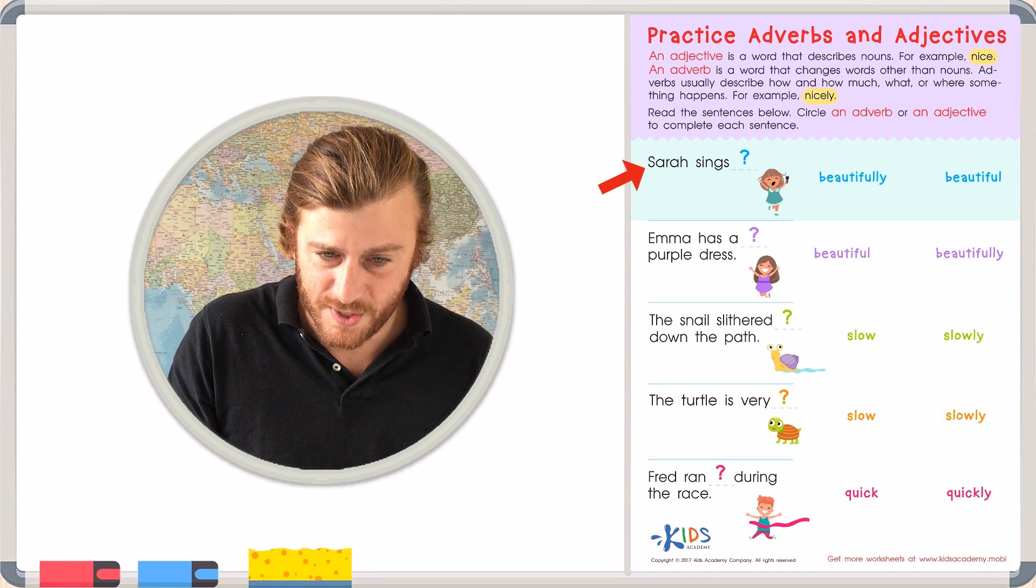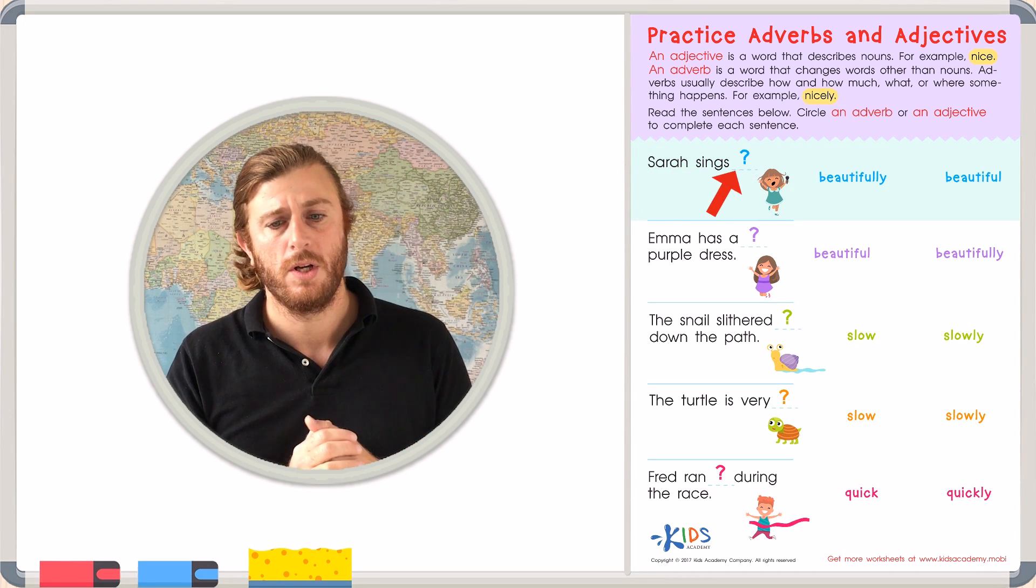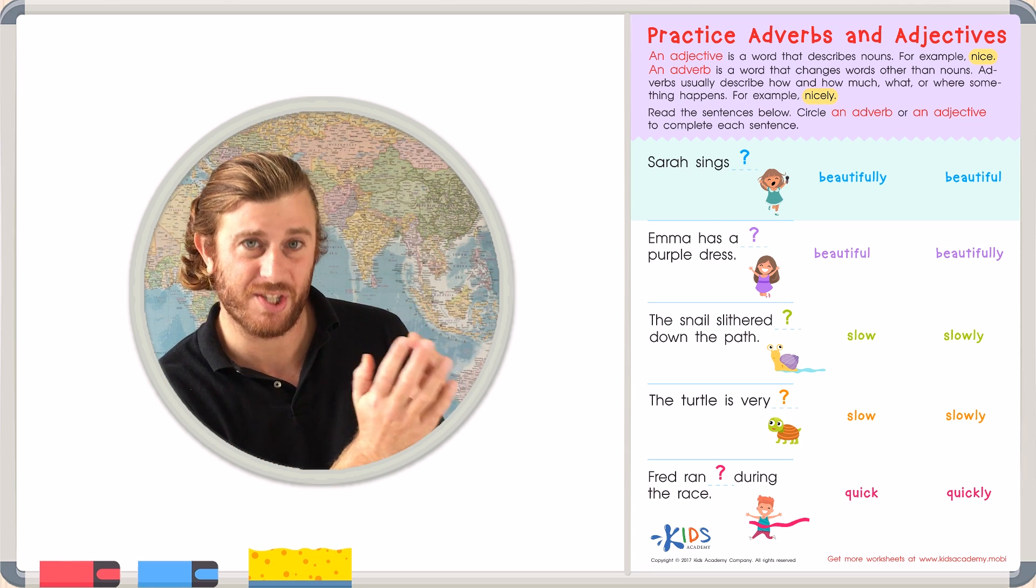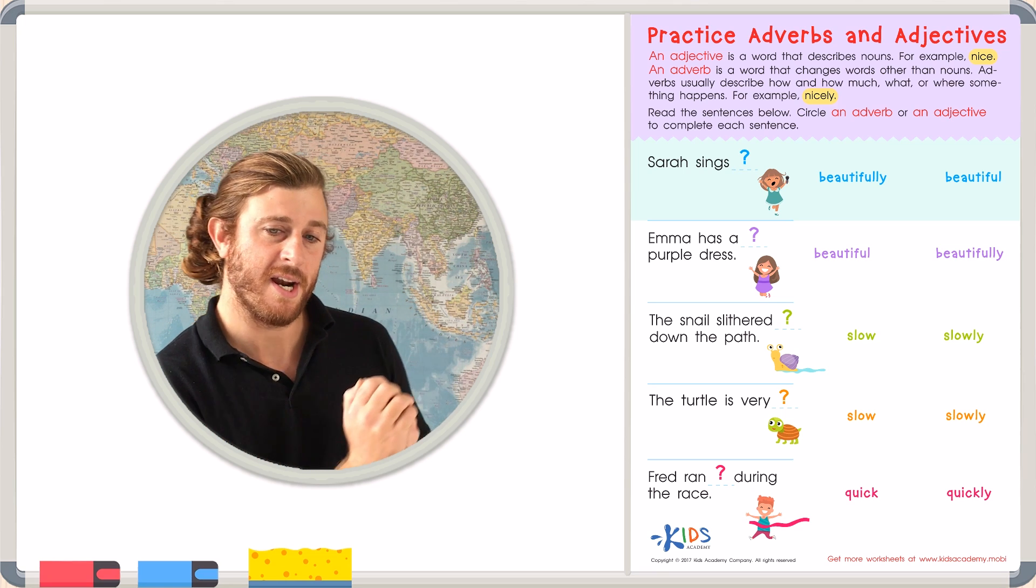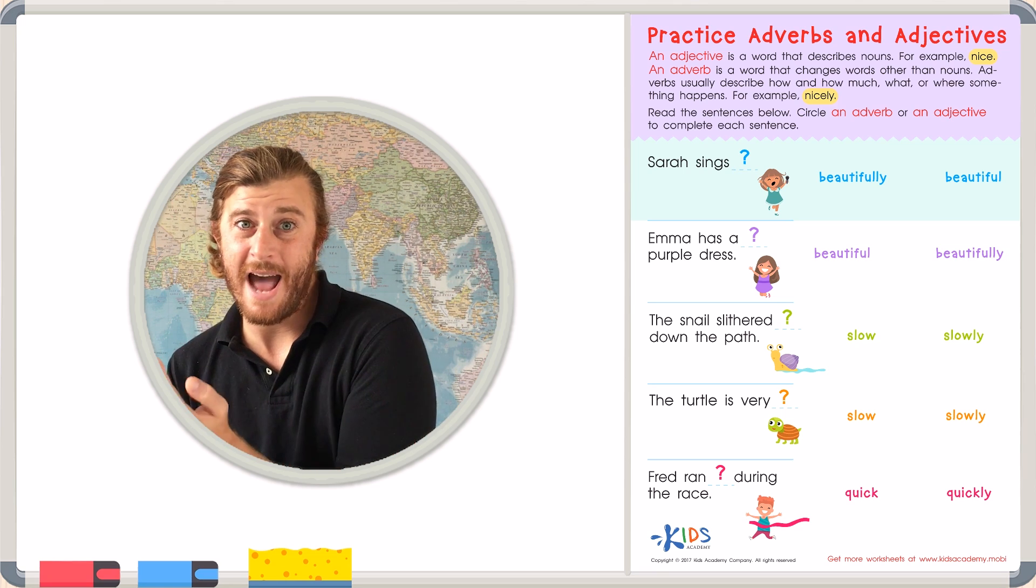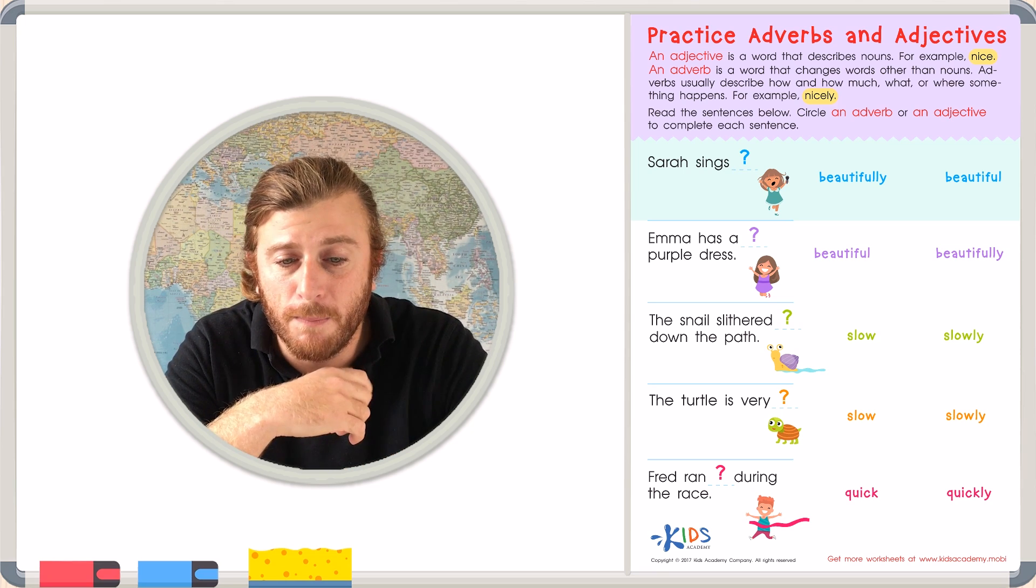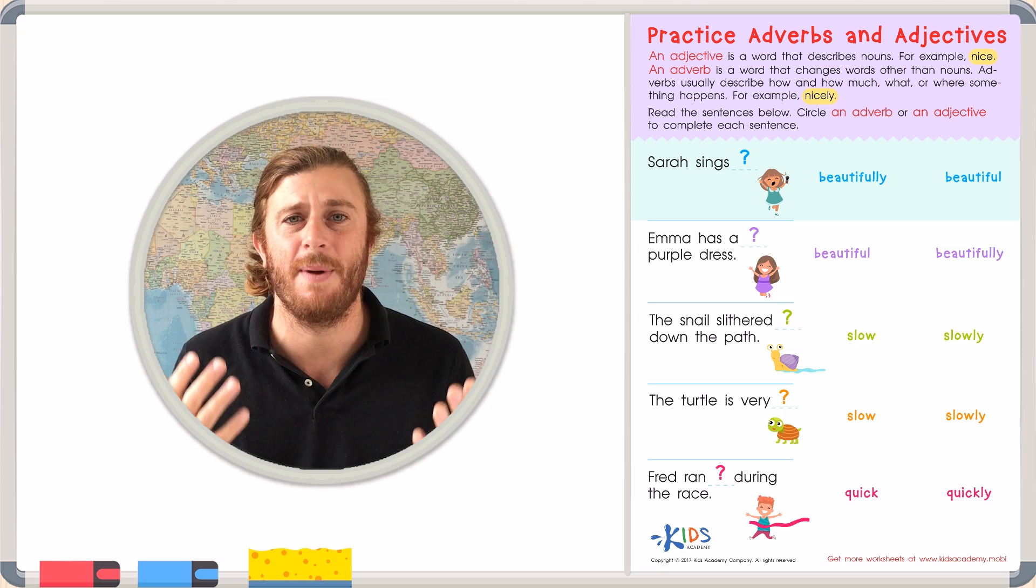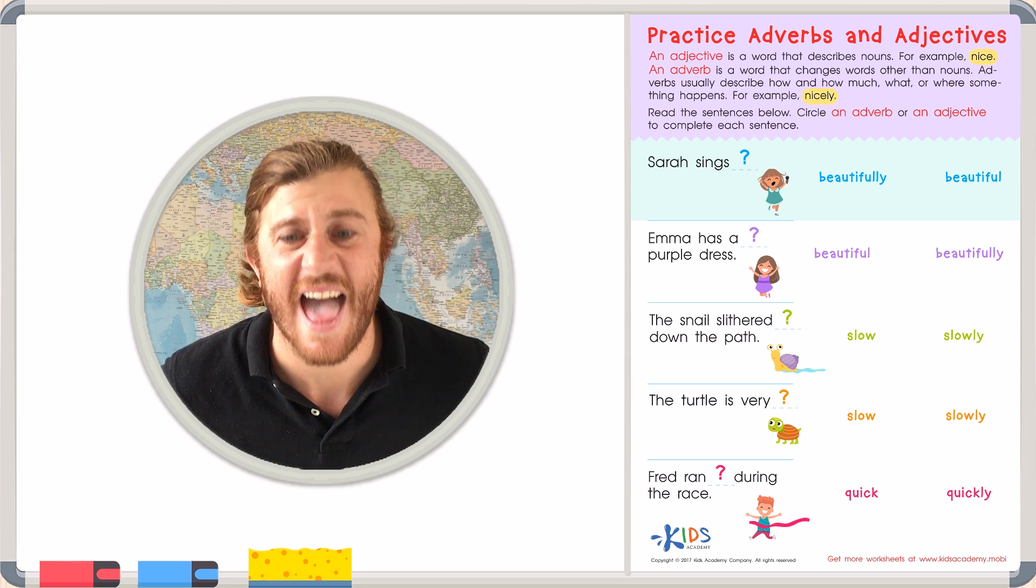The first sentence reads, Sarah sings blank. So, in this blank, will we be describing Sarah? Or how Sarah sings? Will we need an adjective or an adverb? What do you think? Sarah sings blank. Well, the way it sounds is that we're going to be describing how Sarah sings. So, we're going to have to use an adverb.